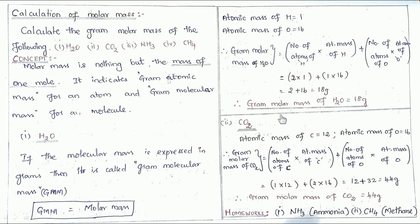Now the next one: carbon dioxide, CO₂. The atomic mass of carbon is 12 and the atomic mass of oxygen is 16. The gram molar mass of CO₂ is calculated as: (number of C atoms × atomic mass of C) + (number of O atoms × atomic mass of O). Number of carbon atoms is 1, so 1×12; number of oxygen atoms is 2, so 2×16. That gives 12 + 32 = 44 grams. This is a very simple calculation.